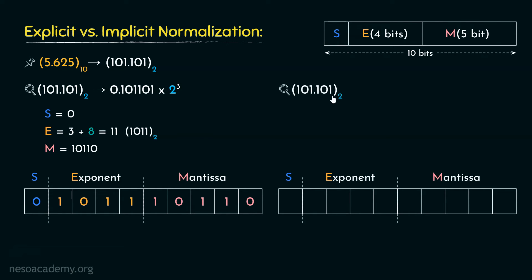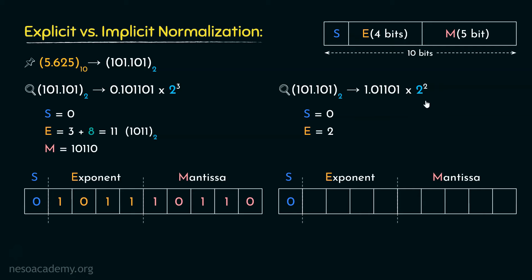Now let's observe how it will be stored in case of implicit normalization. In implicit normalization, we move the radix point to the right-hand side of the most significant one in the bit sequence, giving us 1.01101. We moved the radix point 2 bits towards the left, so the exponent is 2. The sign bit is again 0. For the exponent, 2 plus 8 bias gives 10, which in 4-bit binary is 1010.